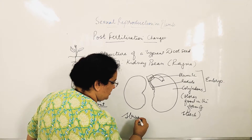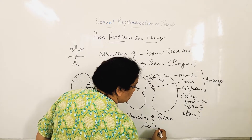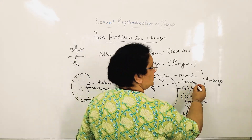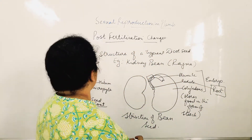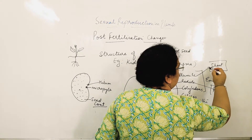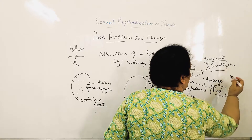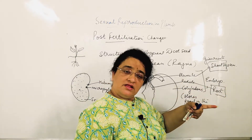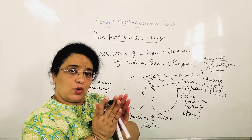To summarize: radicle gives rise to the root system of the plant, and plumule gives rise to the shoot system. The radicle becomes the root, and the plumule with its small folded leaves becomes the future shoot — the baby plant enclosed within the cotyledons. This is the complete embryo structure of a typical dicot seed.